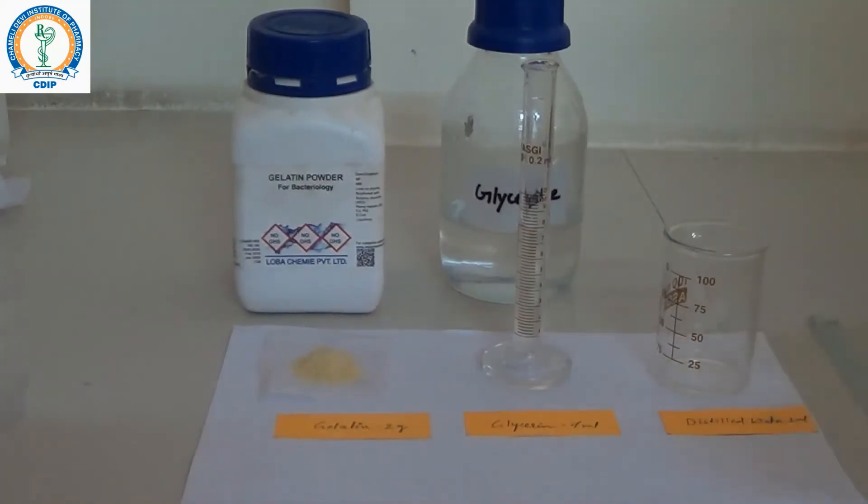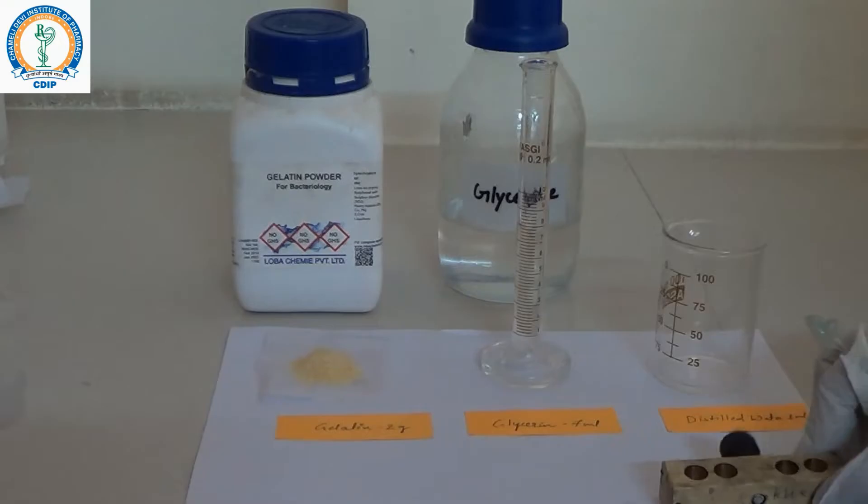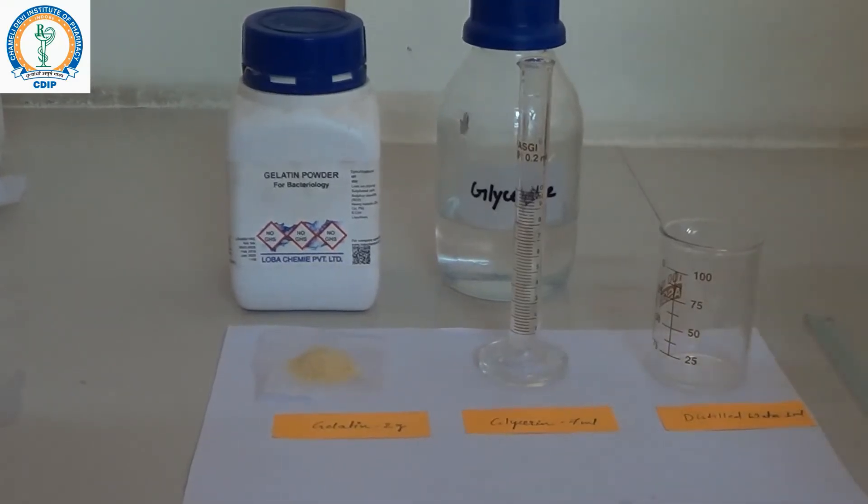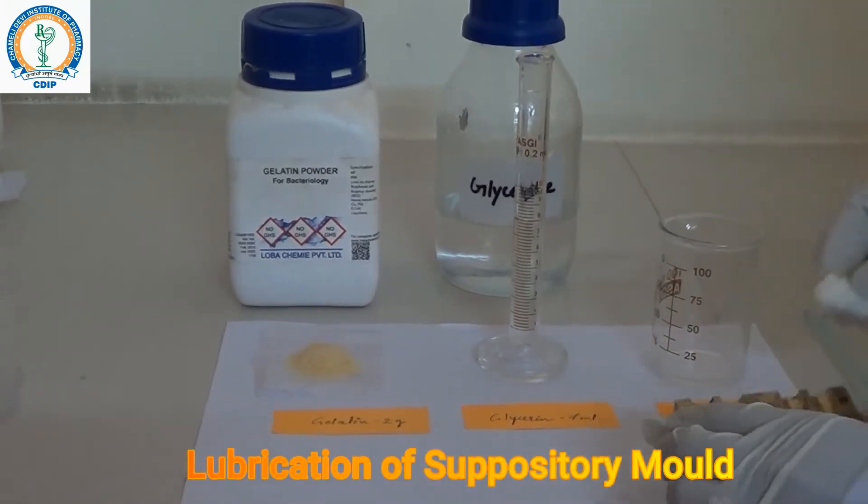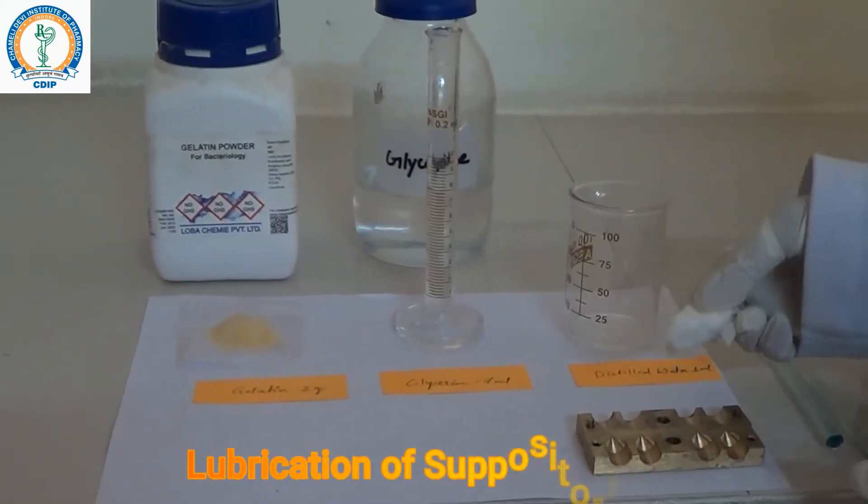Let's start with the procedure. Here we have taken gelatin 2 grams, glycerin 7 grams, distilled water, and the mold for suppository. First of all, lubricate the suppository mold with the help of mineral oil.